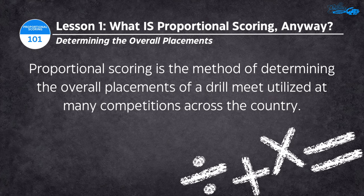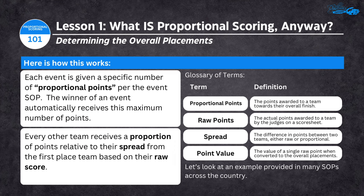Here's how it works: each event — regulation, color guard, inspection, exhibition — is given a specific number of what we call proportional points, found in the SOP. That number is usually 1,000 or 1,200. The winner of an event, no matter what they score on their score sheets, is automatically given the top proportional score. Teams often ask how first-place teams got a perfect score — they didn't. The highest-scoring team simply gets that proportional score.